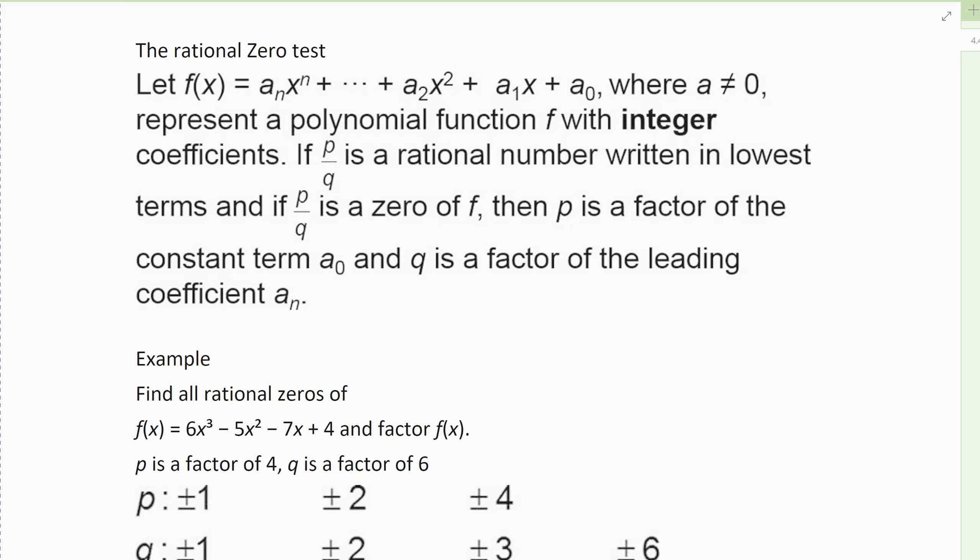So what the rational zero test says: I've got a polynomial with a leading coefficient a_n, and a coefficient of a_0, so this a_0 would be my constant. What the rational zero test says is that the polynomial with integer coefficients, if p divided by q is a rational number in lowest terms, and p divided by q is a zero, then p is a factor of the constant term a_0.